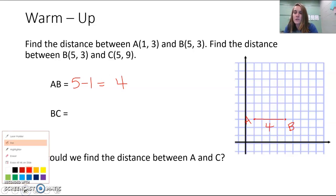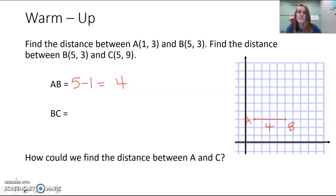Now if we were to find BC, BC we already have plotted as (5,3). C is 1, 2, 3, 4, 5. 1, 2, 3, 4, 5, 6, 7, 8, 9.